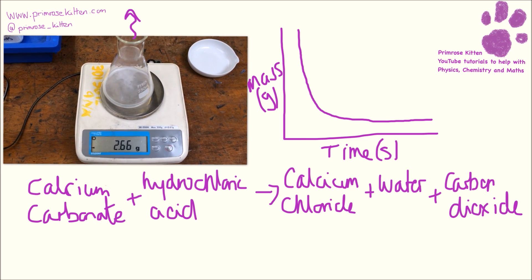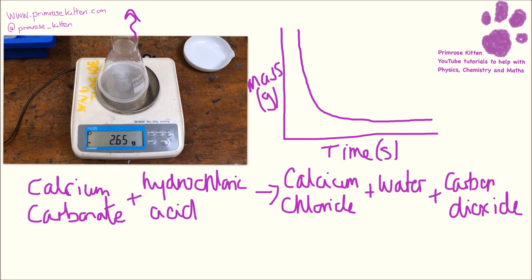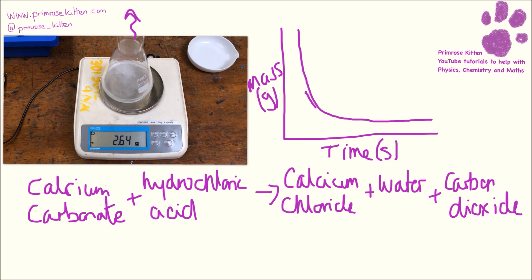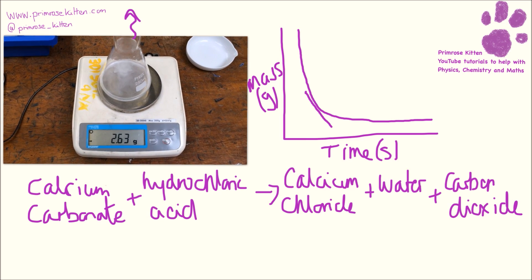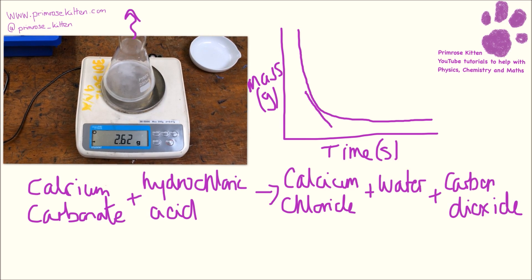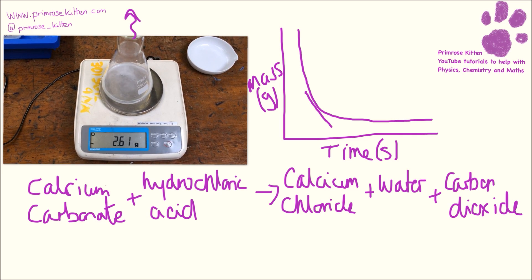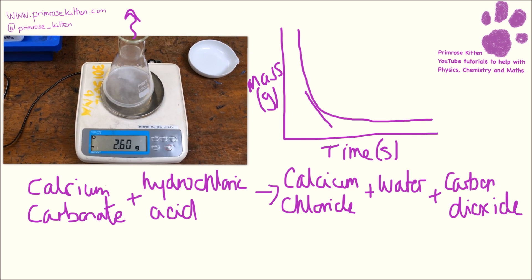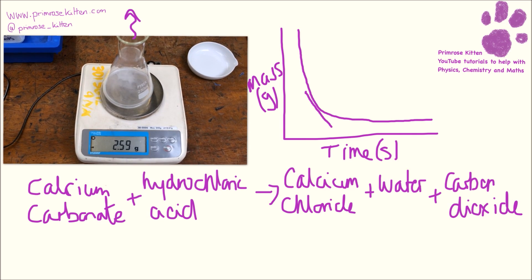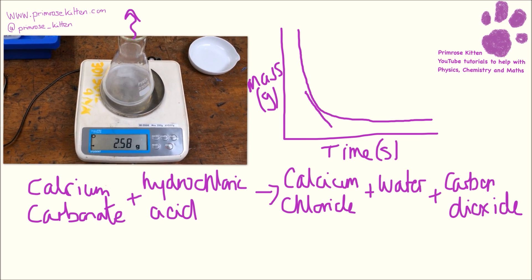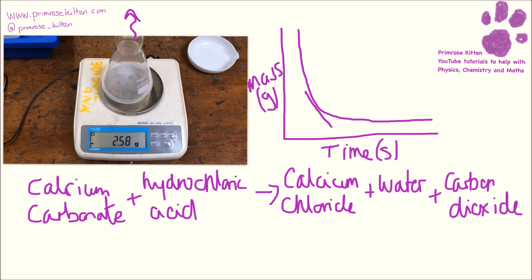Your graph would look a lot more jerky. The other thing they could do — and this is getting quite complicated — is ask you for the rate of reaction at a certain point, where they might ask you to draw a tangent to the line and then work out the rate of reaction at that particular point. So this is just one way to measure the rate of reaction by loss of mass. You could also do this experiment by putting a delivery tube on the top and calculating the amount of gas released in a measuring cylinder or a gas syringe.